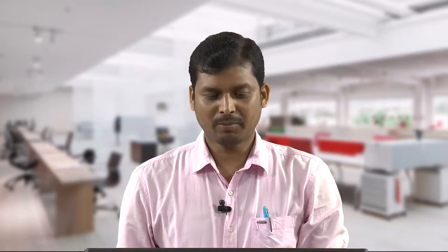In this competition model, if instead of one species in a population there are two or more types of species introduced simultaneously into the same culture, then the growth of one species can be hampered by the extent of nutrients or habitat shared by other species. This type of interaction is known as a competition model.